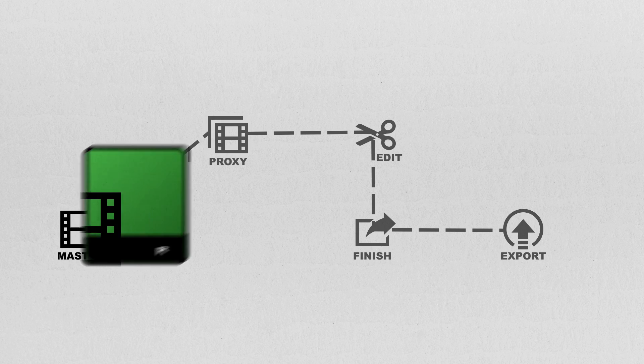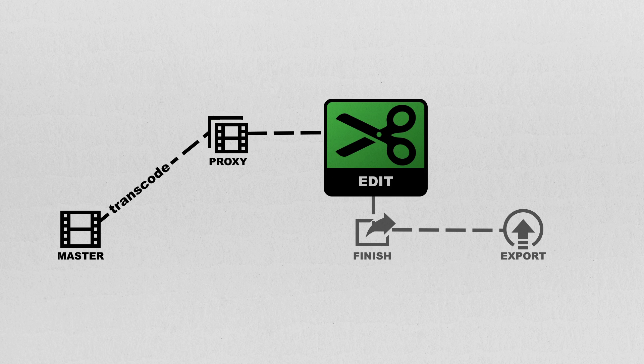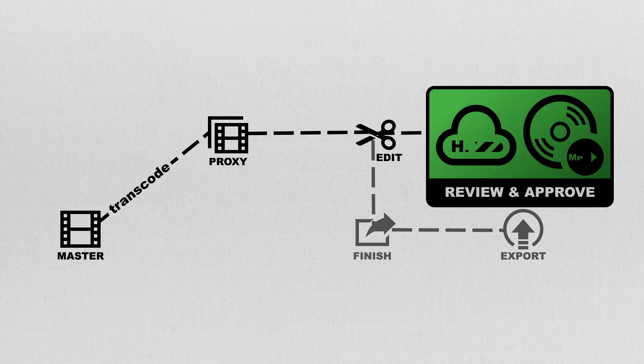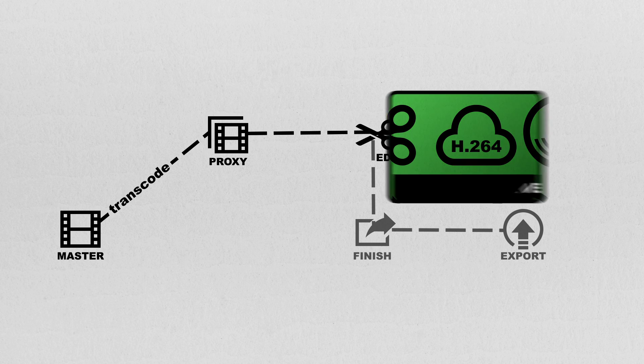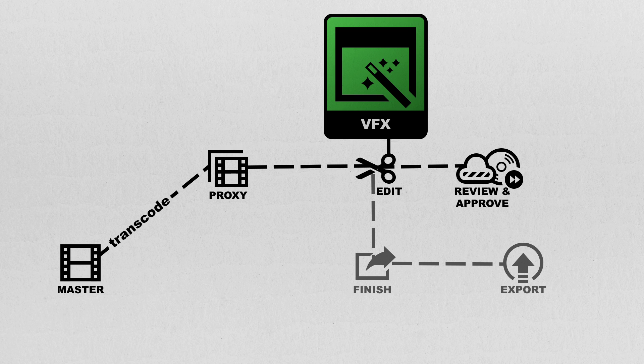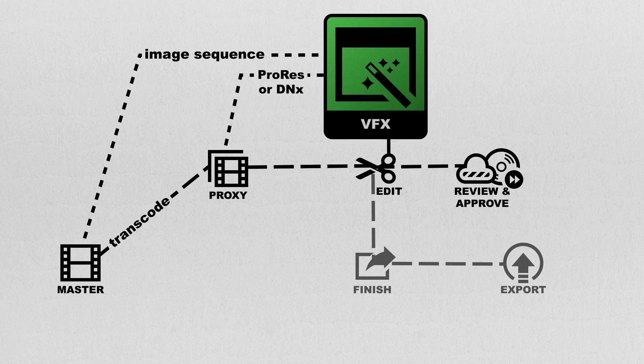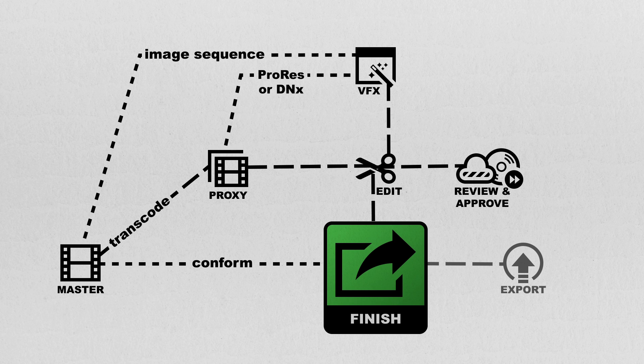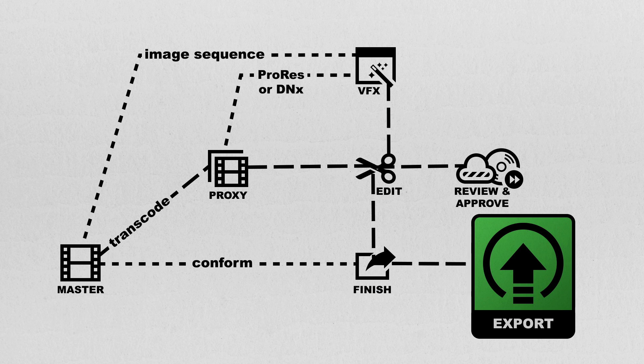VFX can vary as well. Normally, VFX wants the highest quality version you can generate, which typically requires going back to the camera originals and generating image sequences — often DPX or OpenEXR — so VFX artists can work with each frame individually. They'll also usually request a ProRes or DNx file as reference, along with timecode window burns and reference metadata so you can match back to the timeline or source media. They may even request an AAF or XML of your NLE timeline. On lower-budget projects, a hi-res ProRes or DNxHD/DNxHR file may be acceptable. Always ask the VFX house for their deliverables document.